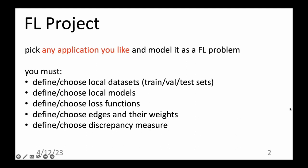In particular, you must choose or define the local datasets, how you split them into training, validation, and test sets. You must define or choose local models — these are design choices you have to make. You also have to choose the loss functions, define the edges that connect local datasets in the empirical graph, the edge weights, and a discrepancy measure for the variation of local models across an edge.